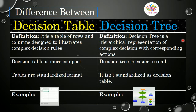The first difference is that the decision table uses a table of rows and columns designed to illustrate complex decision rules, while the decision tree is a hierarchical representation of complex decisions with corresponding actions performed on the basis of conditions. The decision table is more compact compared to the decision tree, while the decision tree is easier to read. Decision tables use a standardized format, while the decision tree is not as standardized.